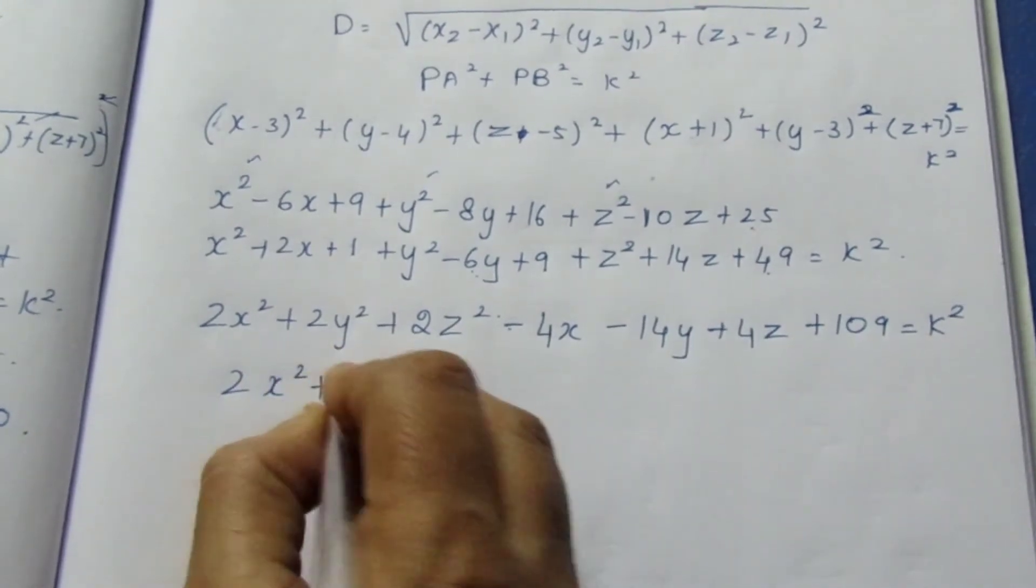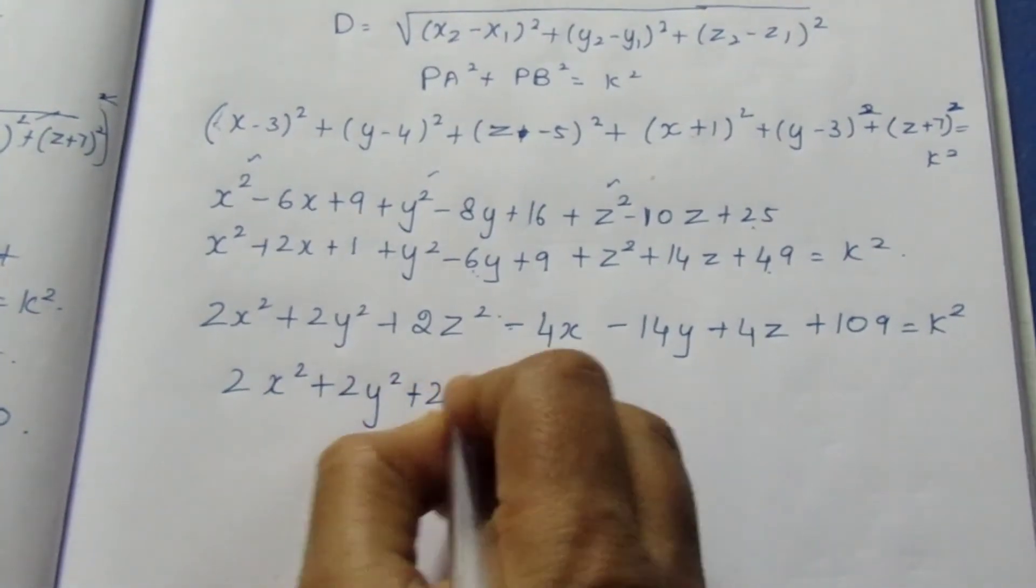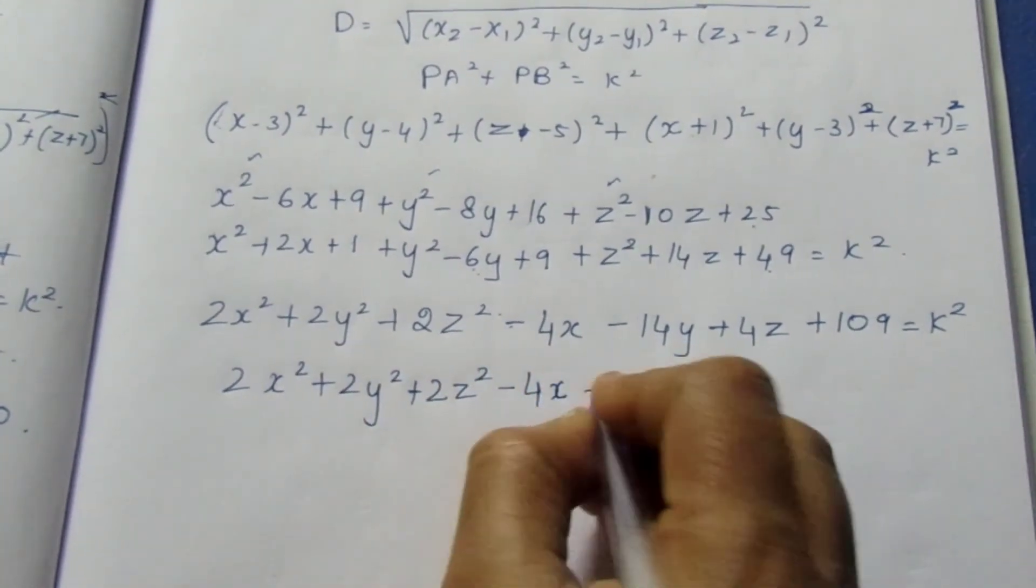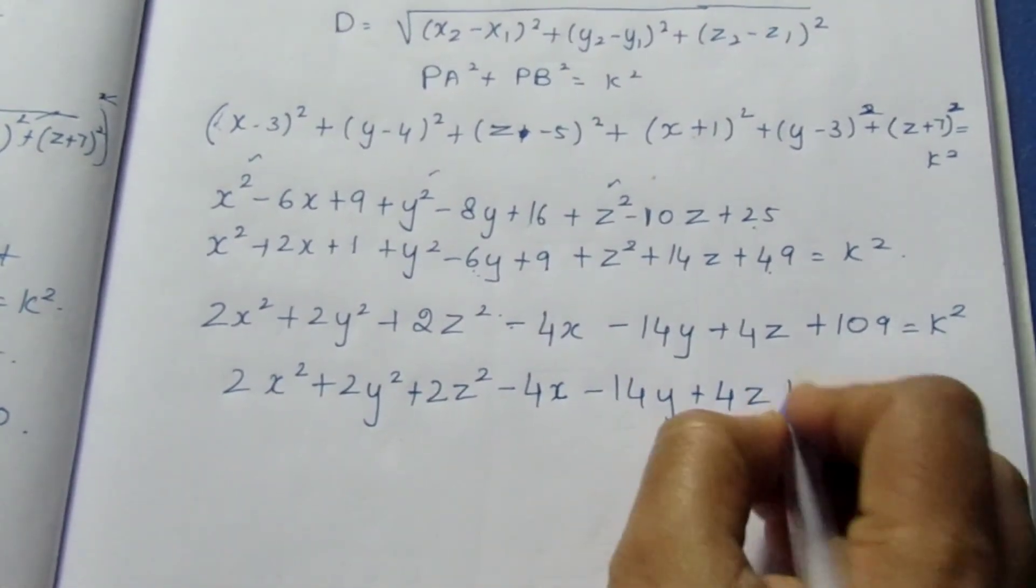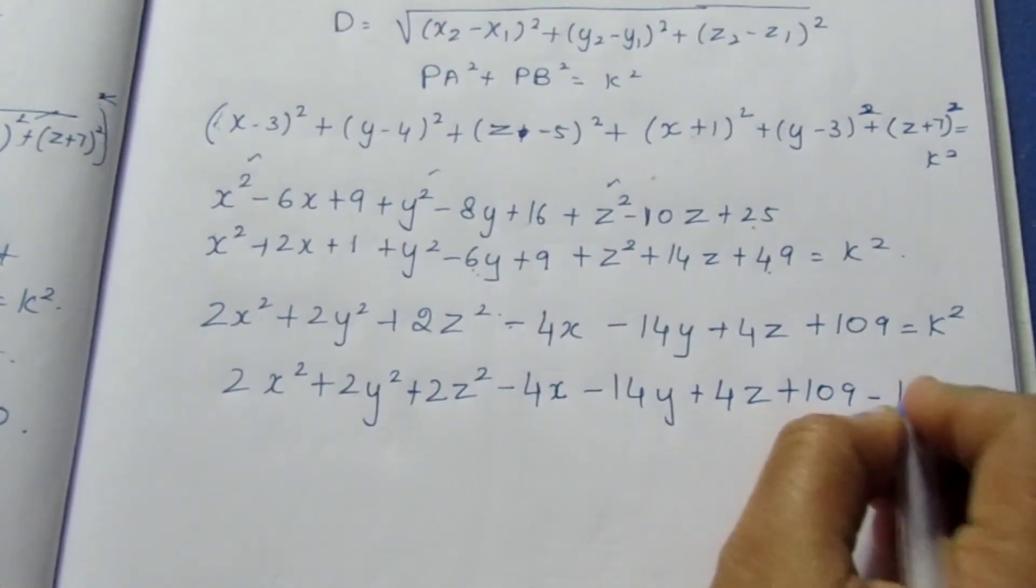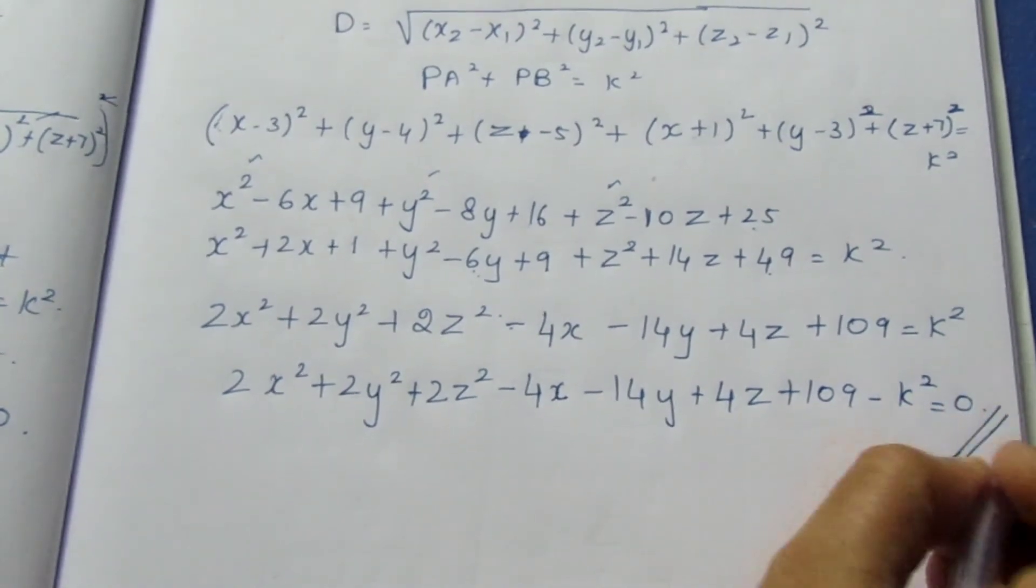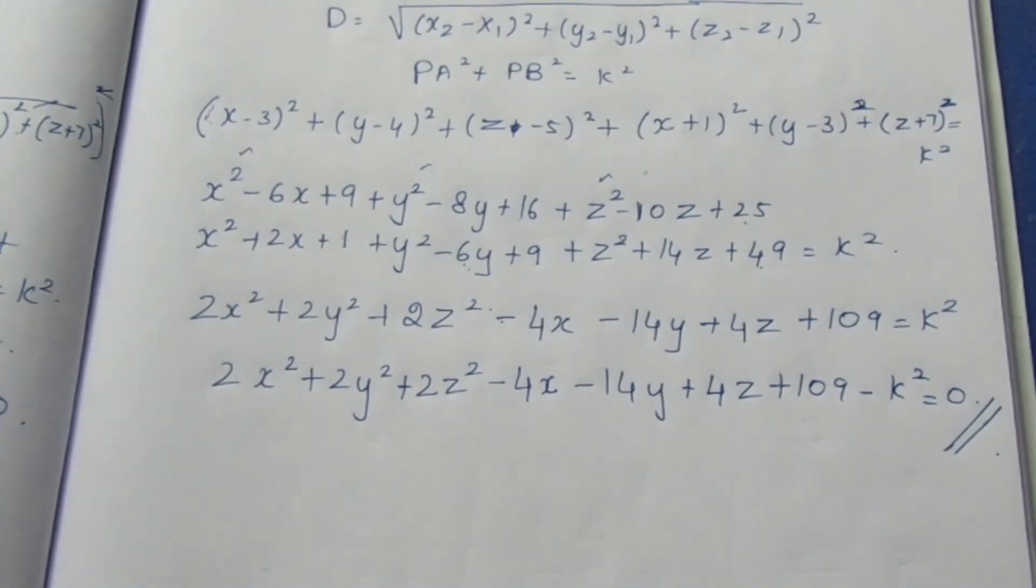2X square plus 2Y square plus 2Z square minus 4X minus 14Y plus 4Z plus 109 equal to K square. This is the required equation. Thank you.